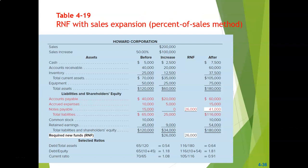Here is the balance sheet showing required new funds with sales expansion using the percentage of sales method. Sales were 200,000 and increase by 50% — 100,000 — so sales are now 300,000. Every asset increases by 50%: cash increases by 50%, accounts receivable 50%, inventory 50%, and plant and equipment 50%. We can see that the total assets increase to 180,000 — a 60,000 increase — with a 50% increase in inventory.